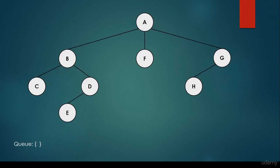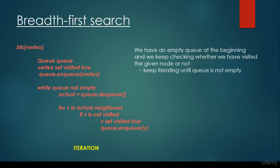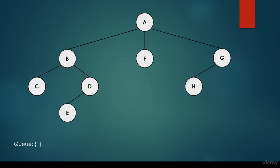Let's see a concrete illustration. We have a tree-like structure with nodes A, B, C, D, E, F, G, and H. At the beginning the queue is empty. Following the source code, we take the starting vertex A, add it to the queue, and set it to visited in order to avoid considering this node over and over again.